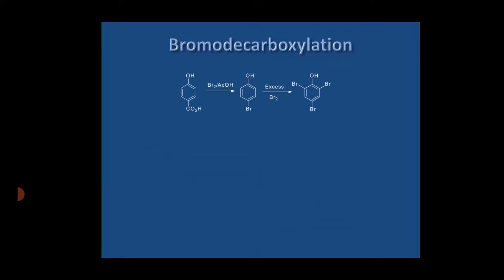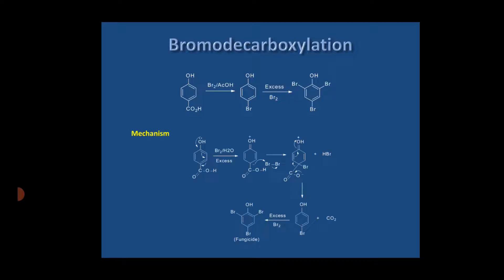Treatment of bromine in acetic acid on para-hydroxybenzoic acid gives 2,4,6-tribromophenol through Ipso attack and liberation of the CO2H group as carbon dioxide. The compound 2,4,6-tribromophenol is used as a fungicide. The lone pair on the oxygen of the OH group facilitates the reaction. This is an example of bromo-decarboxylation, where the CO2H group is replaced by a bromo group.